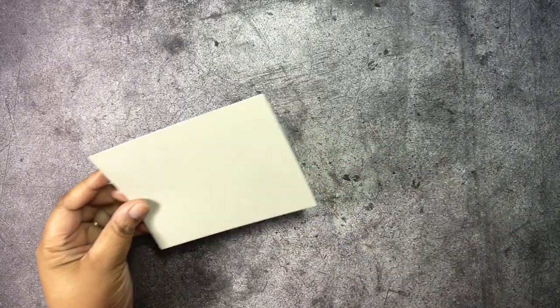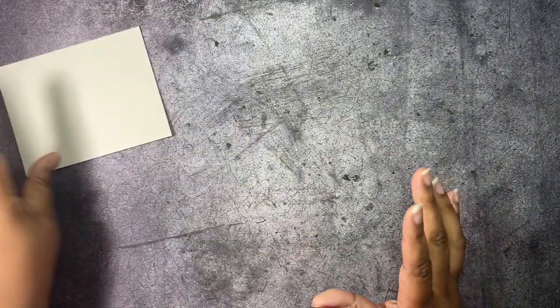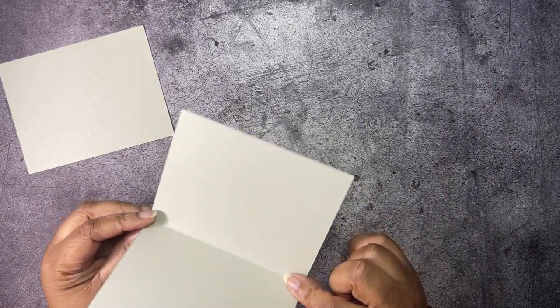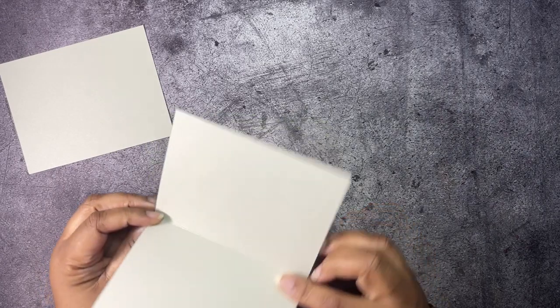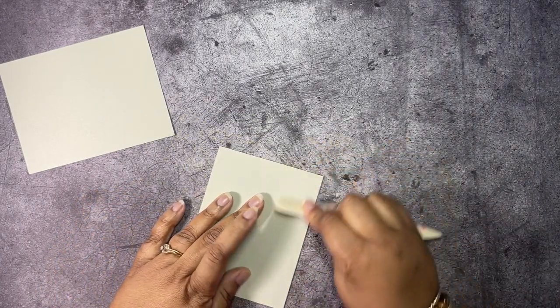I have here a base of five and a half by four and a quarter. Yes that's right, just five and a half by four and a quarter. That is our base, no scoring, no folding. That is Sahara Sand. I also have our card portion that is eight by five and a quarter and I scored it at four. Let me go ahead and burnish that score line down.